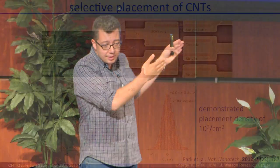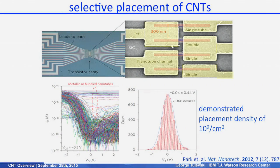Because we can deterministically place the tubes where we want, we can now get statistics on our material. From about 8,000 selectively placed and measured devices, we can extract statistical properties like Vt variation and kurtosis variation. Now that we have these distributions, we can begin working on ways to narrow them down.